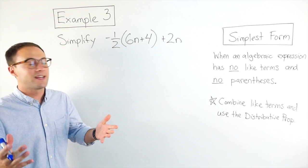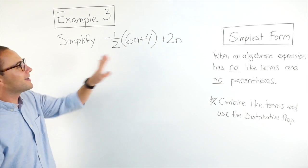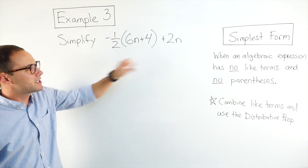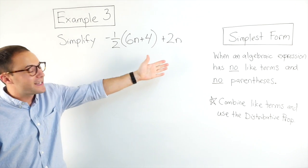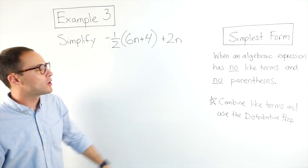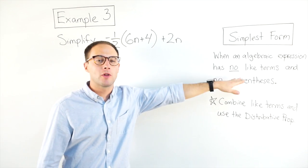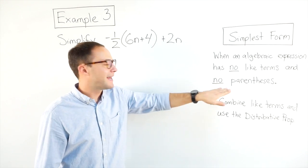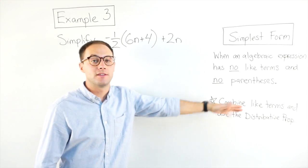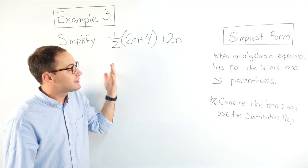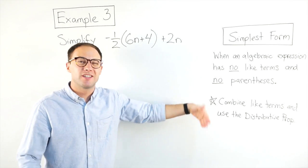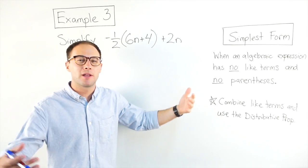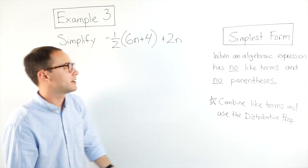For the last example, simplify this expression. To get it in simplest form, we're looking for no like terms and no parentheses. To get there, we combine like terms and use the distributive property when necessary.